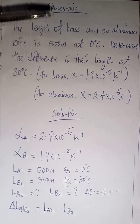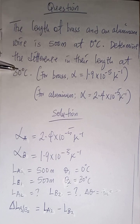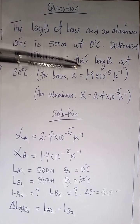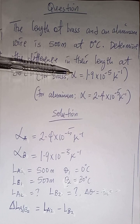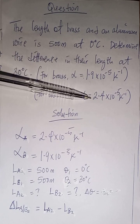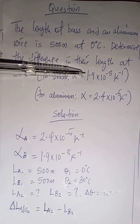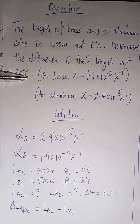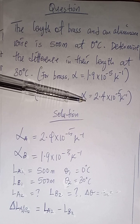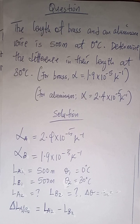Both wires are 500 meters at zero degrees. At 30 degrees they are going to expand, but they expand in different ways to different lengths. The reason is that both have different coefficients of linear expansivity. The higher the linear expansivity, the higher the expansion experienced. Aluminium has a higher linear expansivity than brass, so it will expand more than brass at 30 degrees.